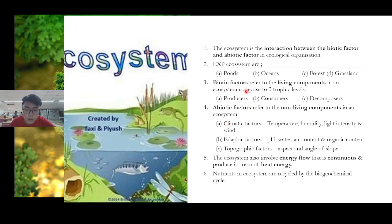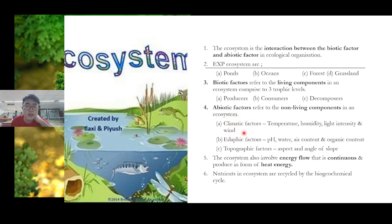Biotic factors — living components — comprise three trophic levels: producer, consumer, and decomposer. Abiotic factors are classified into three categories: climatic factors such as temperature, humidity, light intensity, and wind; edaphic factors such as pH, water content, and organic content; and topographic factors such as aspect, angle, or slope.